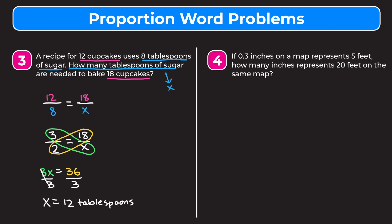Our last example: if 0.3 inches on a map represents 5 feet, how many inches represents 20 feet on the same map? We set up two equivalent ratios of inches on the map to feet in real life. From the first part: 0.3 inches over 5 feet. Set equal to x inches over 20 feet.